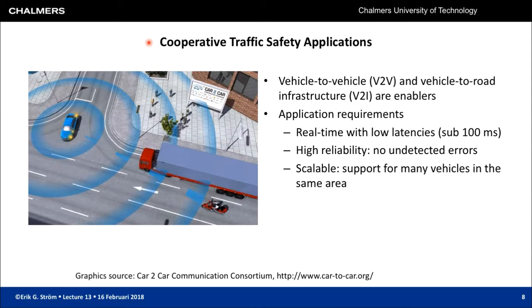Cooperative traffic safety applications — what are those? Consider an example where a blue car is making a left-hand turn, but it is not visible to a two-wheeler due to a truck blocking the line of sight. This is dangerous because the two-wheeler is approaching the intersection unaware. If the blue car communicates its position and intention, the two-wheeler's application can warn the rider. If the driver takes no action, automatic systems can reduce speed to avoid a crash.